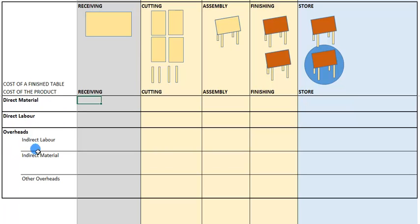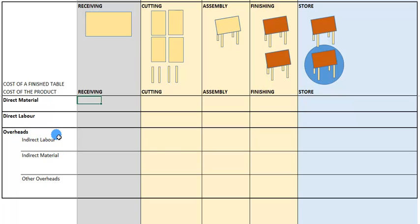There are three headings that make up the cost of manufacturing a finished product: direct material, direct labor, and overheads. Overheads include three categories: indirect labor, indirect material, and other overheads. It's important that we distinguish between direct material and indirect material, and between direct labor and indirect labor, because the indirect labor and material form part of overheads.